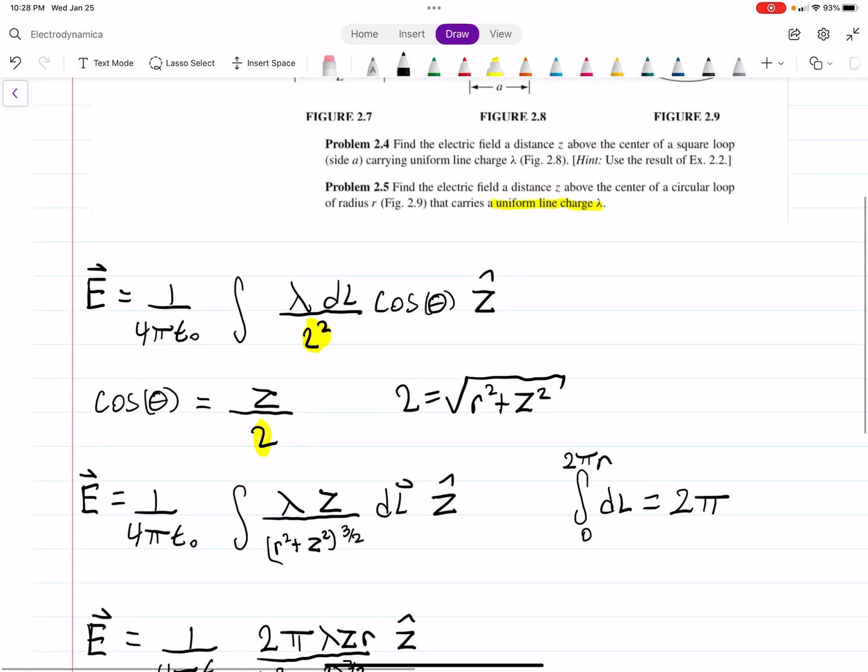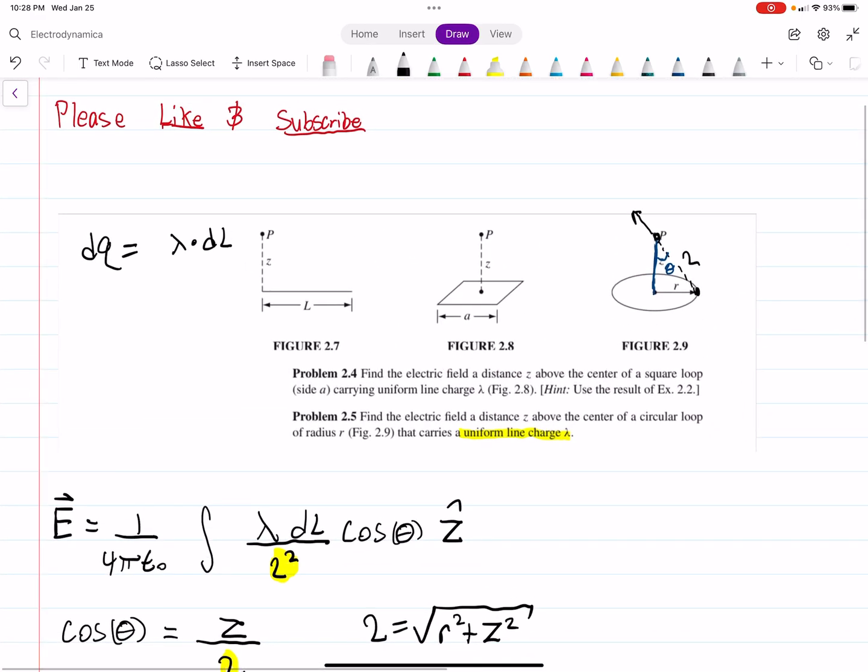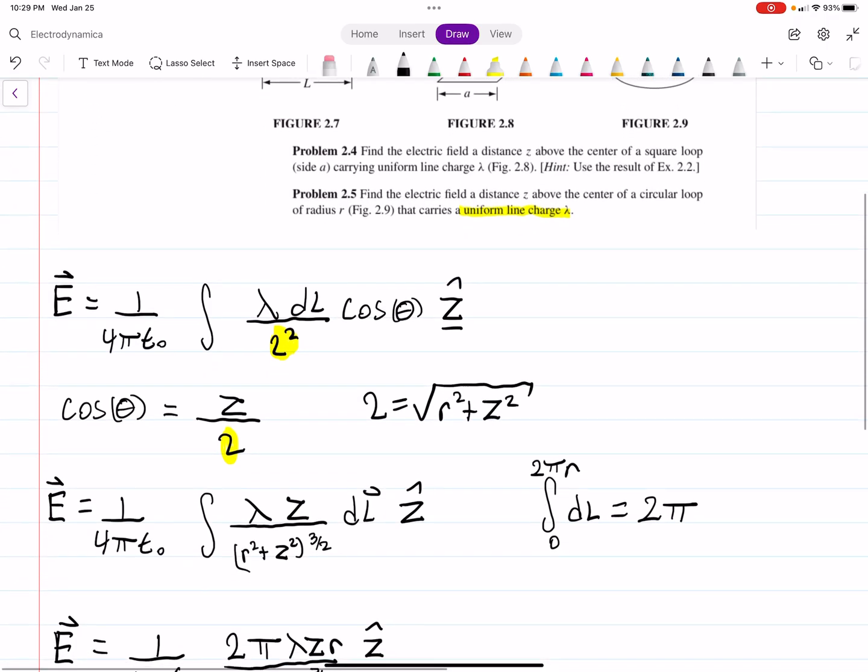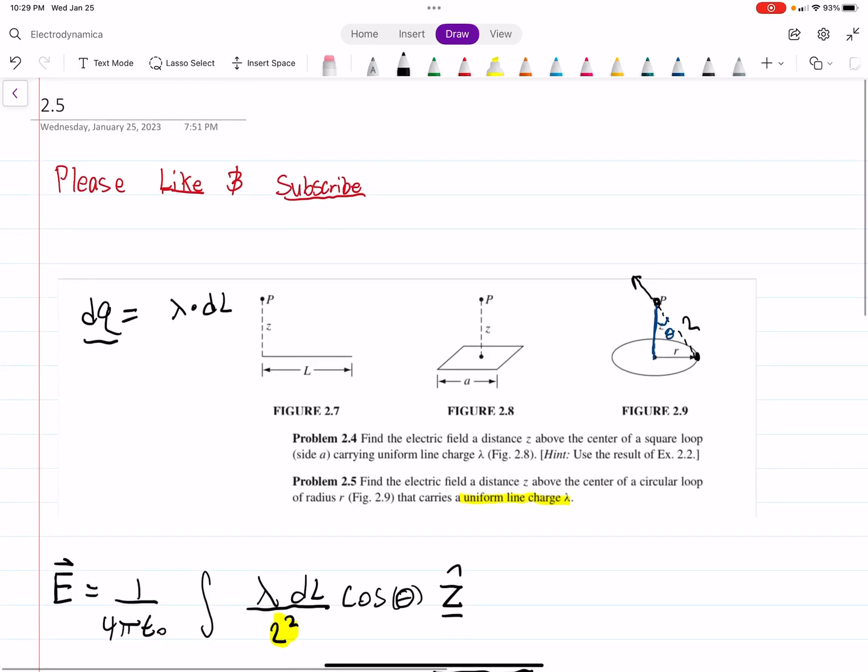So that's kind of how you do the problem. You set up your main equation, and once you have that you need to substitute your dq depending on what type of problem it is. In this case it's a line charge. You try to take advantage of any symmetries. In this case we only needed the z hat component. And then you usually rewrite your trig functions and your r squared as something else. Once you do that, well then you just integrate. So hopefully that makes sense. If it did, please like and subscribe. I'd greatly appreciate it and I'll post more videos.